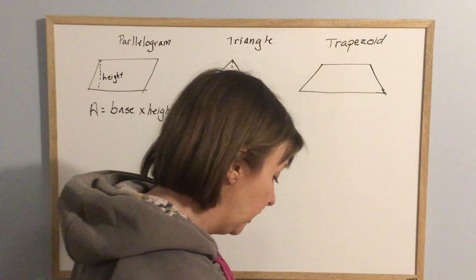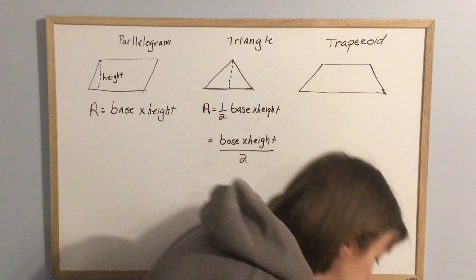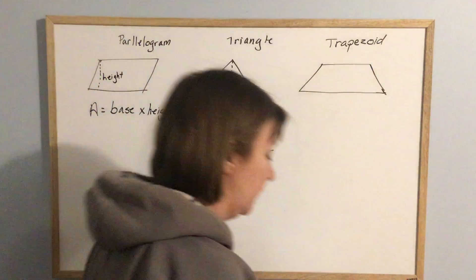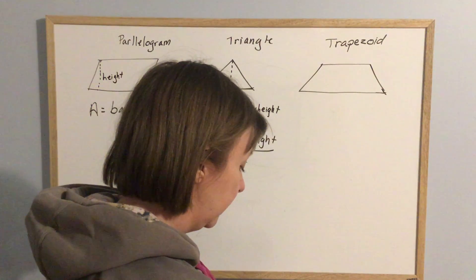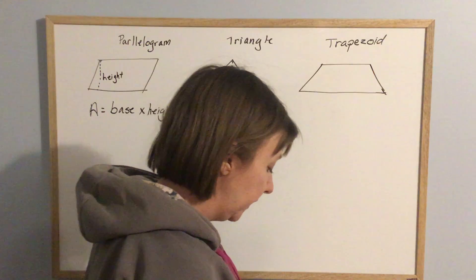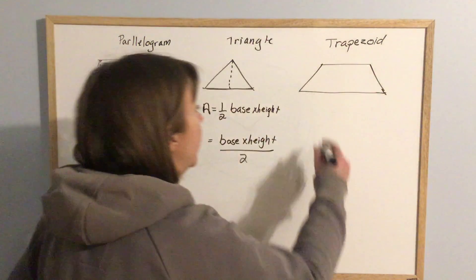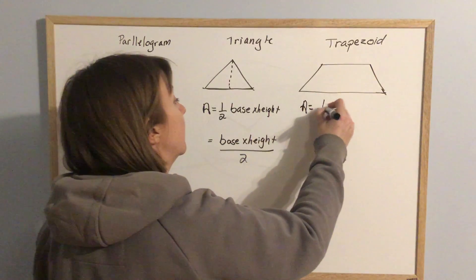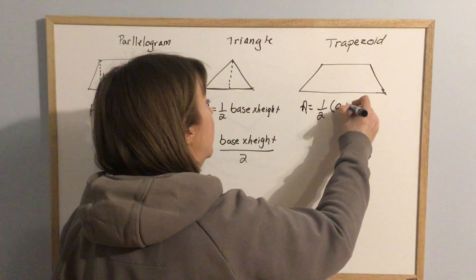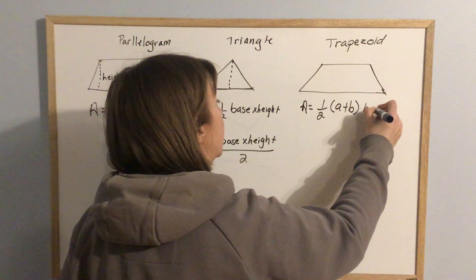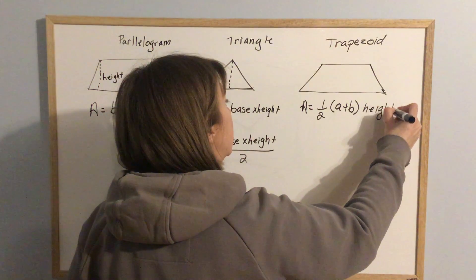The formula for area for that is, again, you can think of this a couple of different ways. The way that it is stuck in my head is area is one-half A plus B times height.